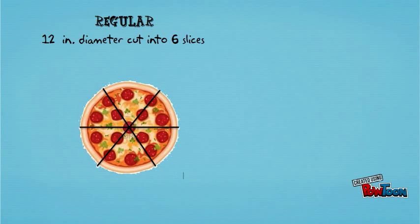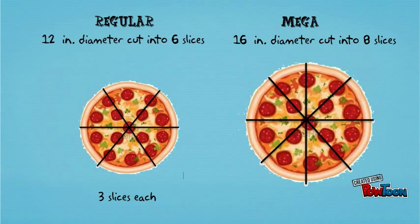The 12 inch regular pie is cut into six slices with three slices for each student. And the 16 inch mega pie is cut into eight slices with two slices for each student. So let's start by figuring out the area of each pizza and then determine the fraction of the area of each pizza a student would get.